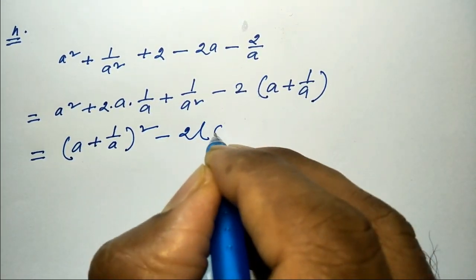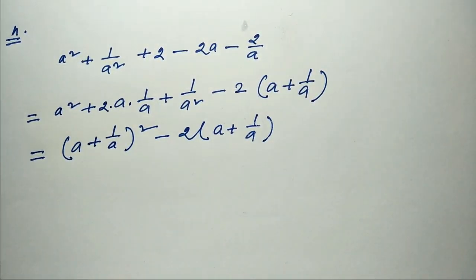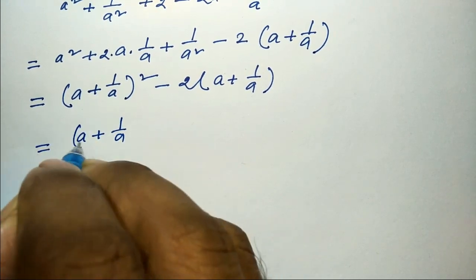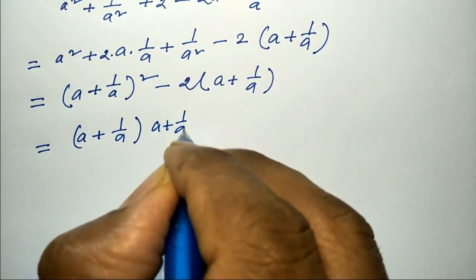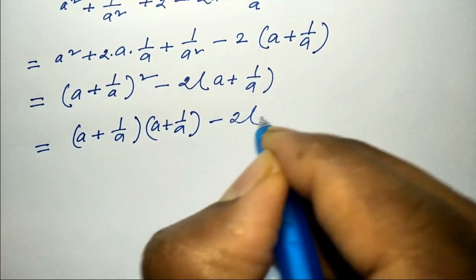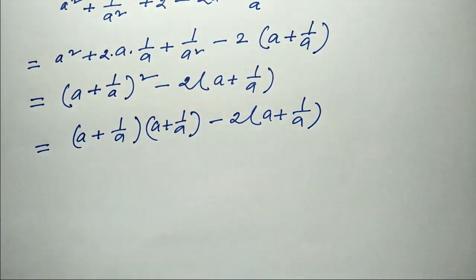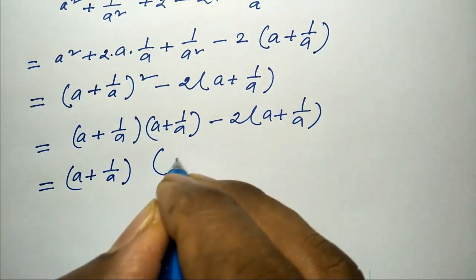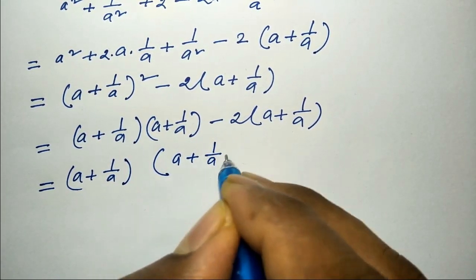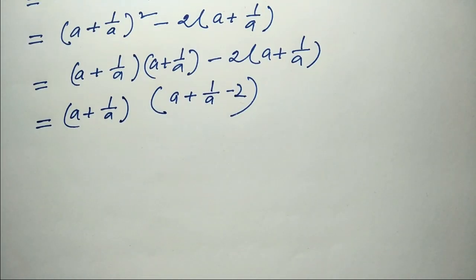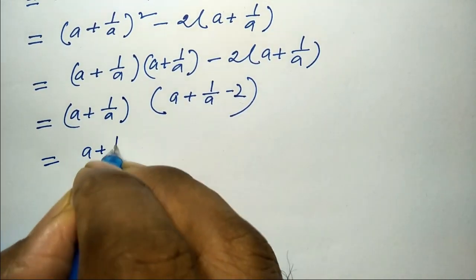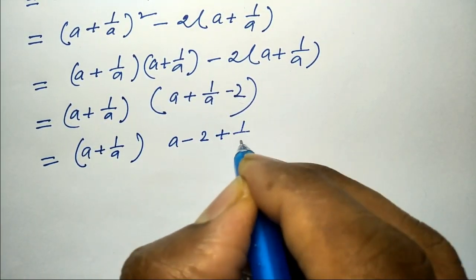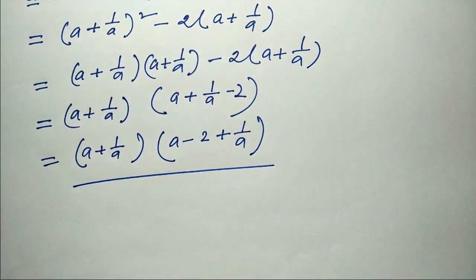This becomes: a plus 1 by a, the whole expression times a plus 1 by a, then 2 times a plus 1 by a. Factoring: a plus 1 by a, times a plus 1 by a, minus 2. The factored form without theta is verified as correct.